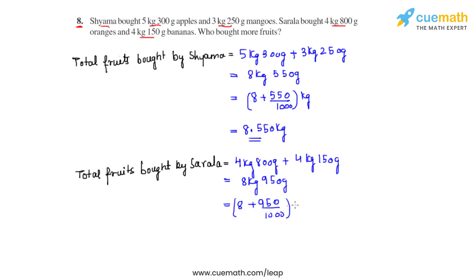So we write 8 plus 950 by 1000 kilograms, which gives us 8.950 kilograms as the total amount of fruits bought by Sarla.